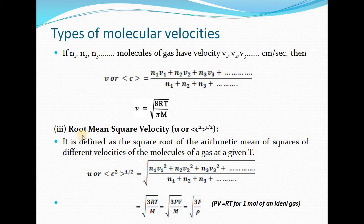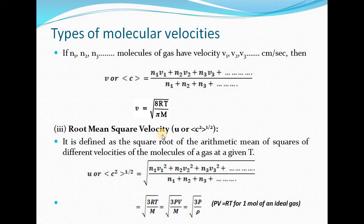The next one is root mean square velocity, denoted by symbol U or the square root of the average of squares of velocity, written as (c²)^(1/2). From the name, this is the square root of the mean of squares of the velocities possessed by different molecules of a gas at a particular temperature T. It is defined as the square root of the arithmetic mean of squares of different velocities of the molecules of a gas at a given temperature T.